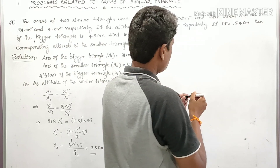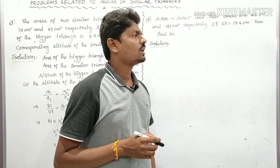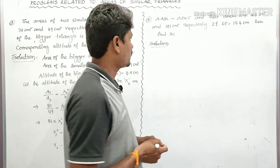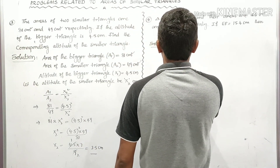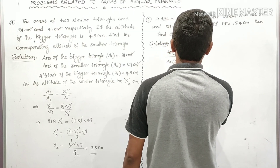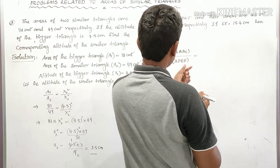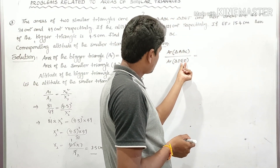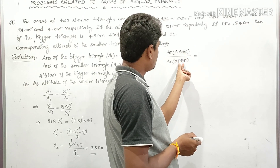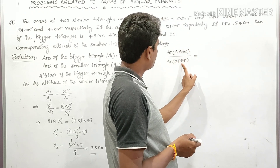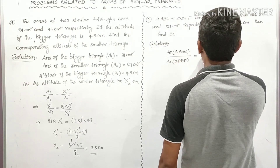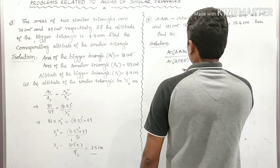BC and EF are the lengths of corresponding sides of the two similar triangles. This is related to the first statement: the ratio of the areas of two similar triangles is equal to the ratio of the squares of their corresponding sides. In triangle DEF, EF corresponds to BC — the last two letters. So: Area of triangle ABC / Area of triangle DEF = BC² / EF².